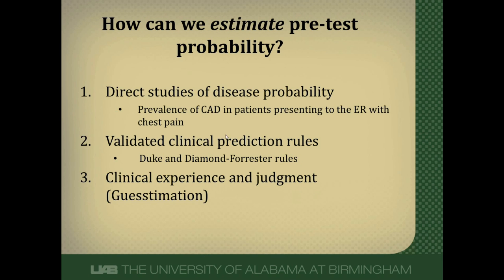Where do these pre-test probabilities come from? They can come from one of three areas: direct studies of disease probability, validated clinical prediction rules, or the least accurate one — clinical experience and judgment. Direct studies are studies in which researchers follow a group of patients with a certain complaint and see what percentages of individual diseases are diagnosed. For example, let's say we want to know what diagnoses patients presenting to the emergency department with chest pain ultimately receive. Let's say 60% get diagnosed with coronary artery disease, 10% chest wall pain, about 1% with pulmonary emboli, 5% with lung cancers, and so on. If your next patient comes in with chest pain and is like those in that study, you can use those probabilities as your patient's pre-test probability.